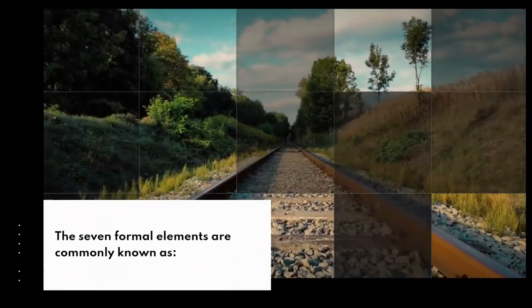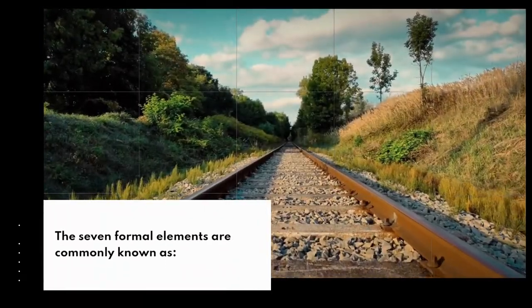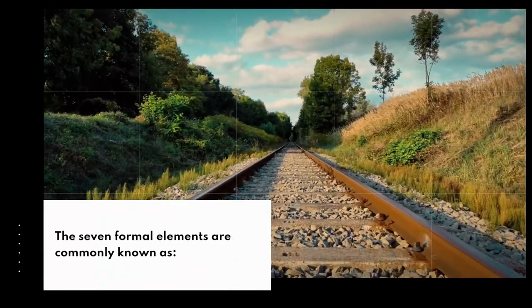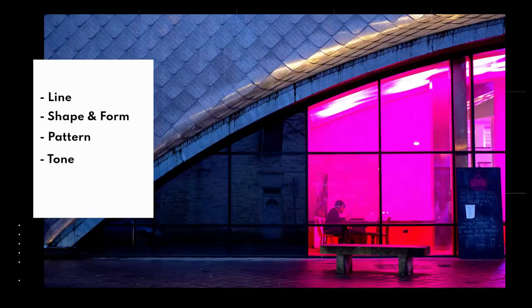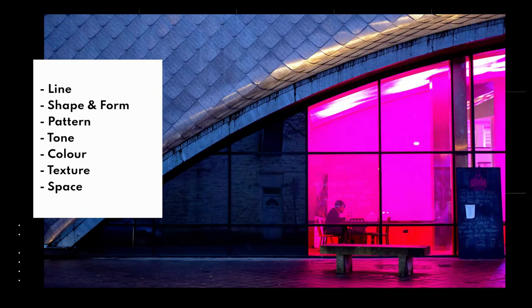The seven formal elements are commonly known as line, shape and form, pattern, tone, color, texture, and space.